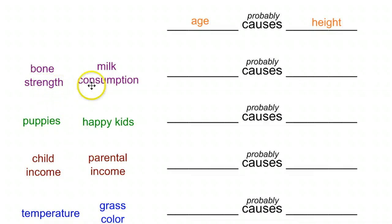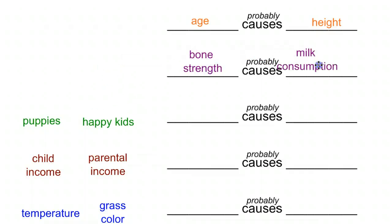Next one, bone strength and milk consumption. Does having stronger bones cause you to drink more milk? You could maybe make a very weak argument that if you have very strong bones, your body is craving calcium. But more than likely, drinking milk, giving you calcium and vitamin D, is going to strengthen your bones. So it makes more sense that the mechanism here of having these things in your body makes your bones stronger.